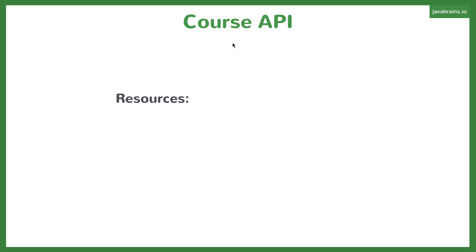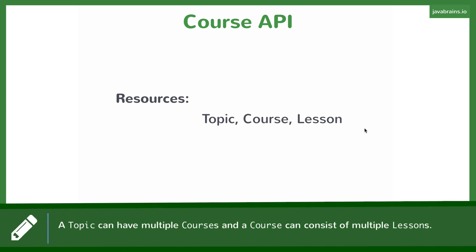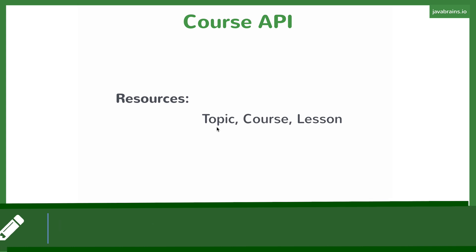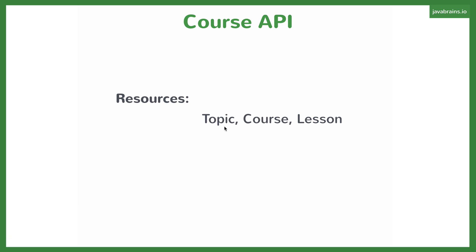For the sake of our course API, we're going to be identifying three separate resources: the topic, the course, and the lesson. For the scope of this course, the Spring Boot Quick Start course, these three resources should do. We're going to have a bunch of ways in which you access these resources, either to get it or to update it. Those ways are influenced by the HTTP method you're using for accessing them. So the HTTP method influences what you do with these resources, but the resources themselves are the constants — they are the entities or the nouns in your system.